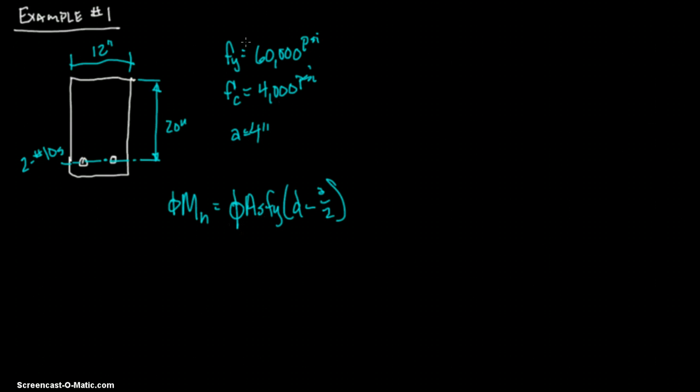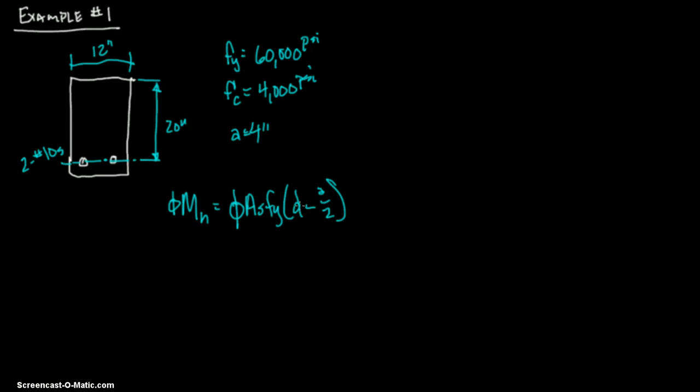And we have to go up here and say, what do we have? We know f_y, it's 60 ksi. D, and hopefully they explain this, this equals d. The distance from your extreme compression fiber, which we're going to say is this right here, to your centroid of your steel, and that's d. That's what equals d is.